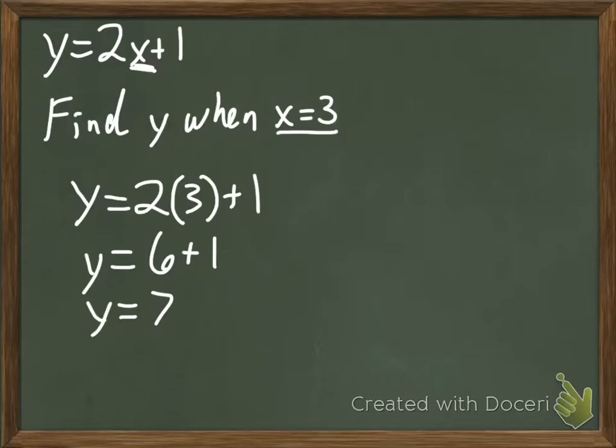So our input was 3, our output is 7 from that function. This is where that machine thing kind of kicks in. We're going to spit stuff into our machine, it's going to spit something else out.